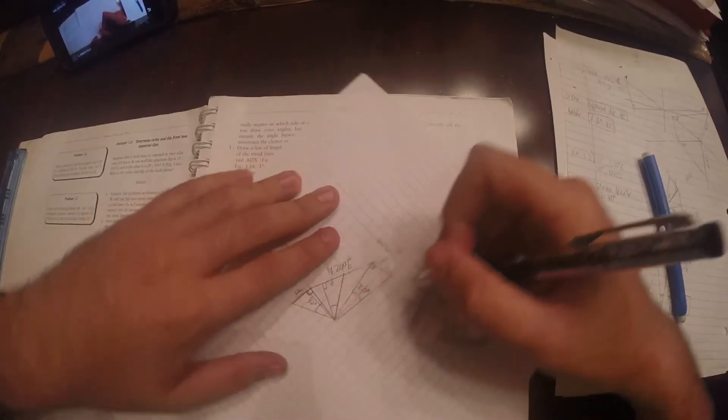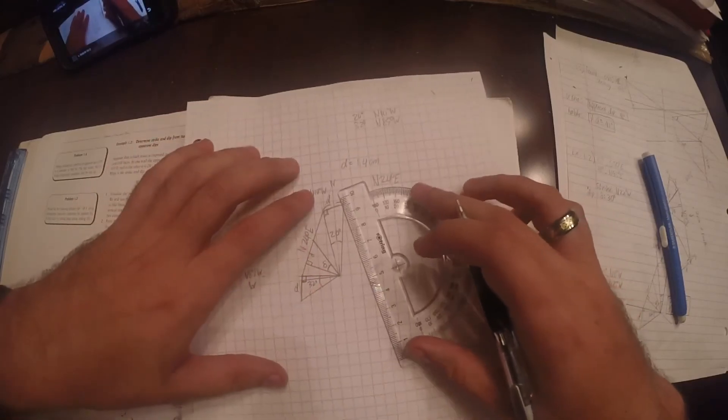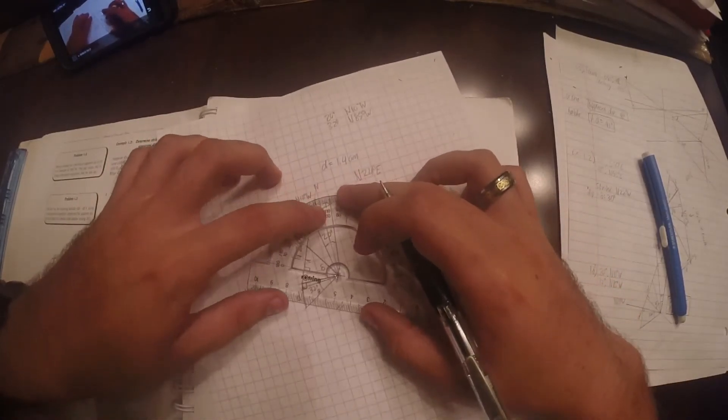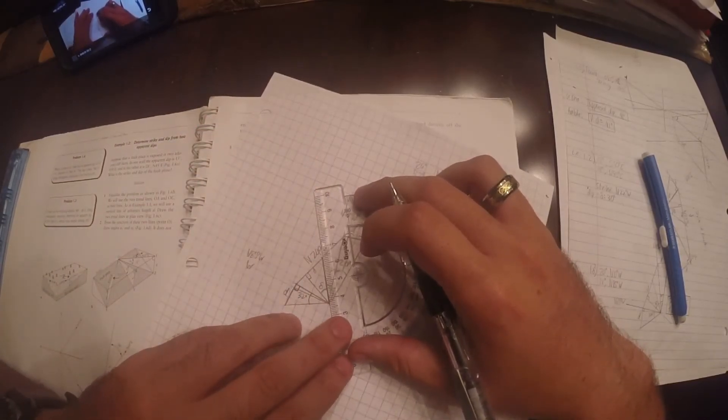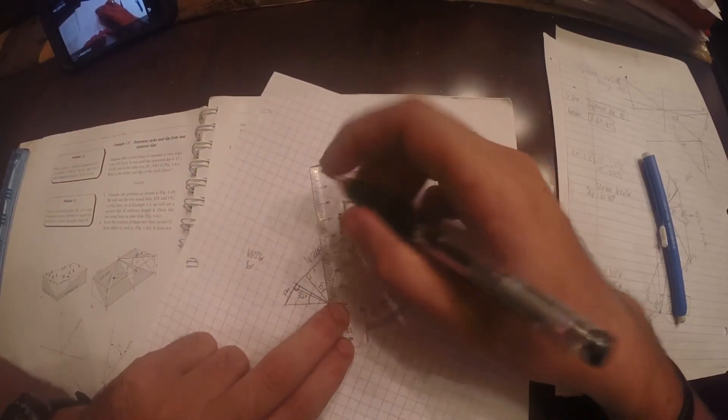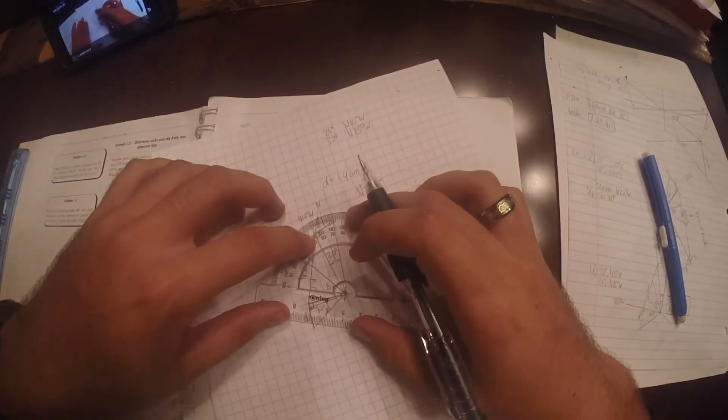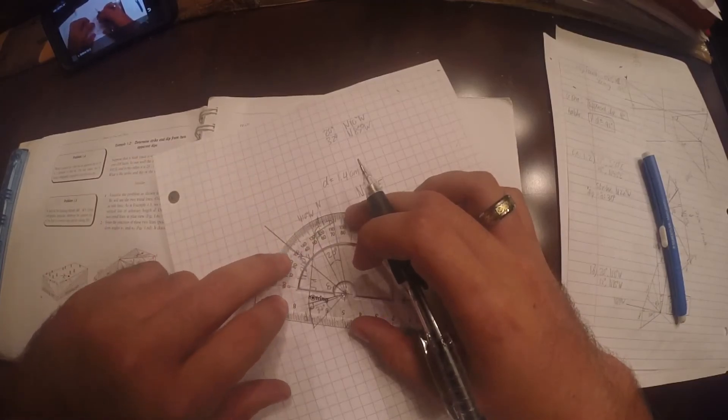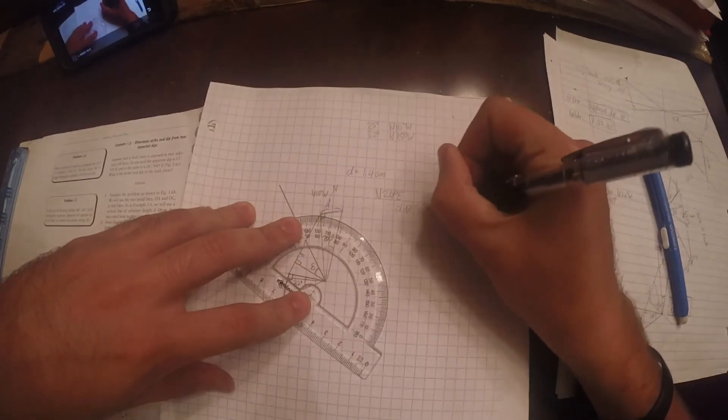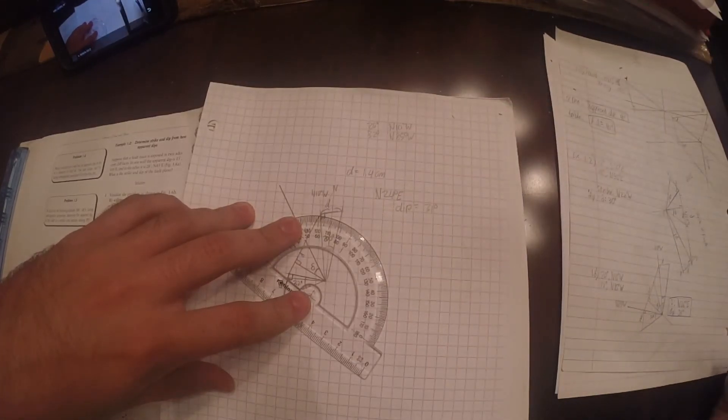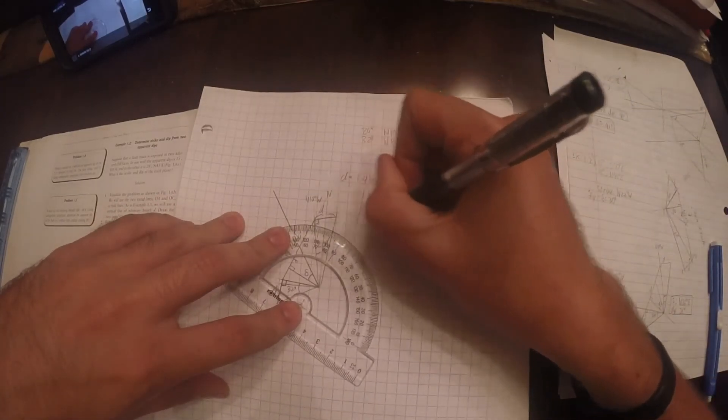Measure this angle, which is angle delta for dip. Measure that angle and you have your dip degree. I need to make that longer so I can see using the protractor. So we have a dip of, looks like 31 degrees. Dip equals 31 degrees. And that matches what I got last time I did this. So there's your answer for that.